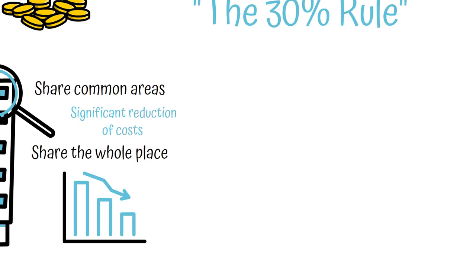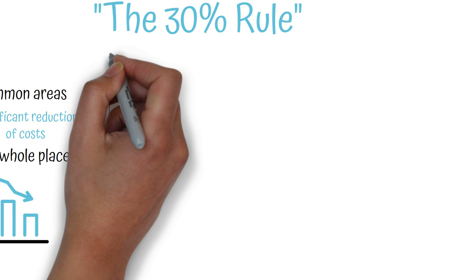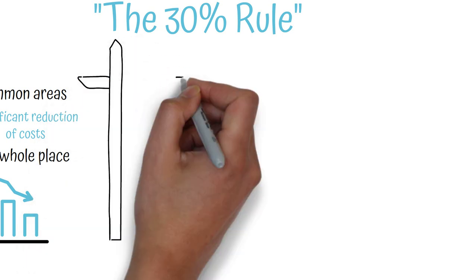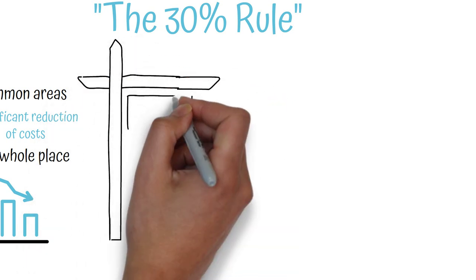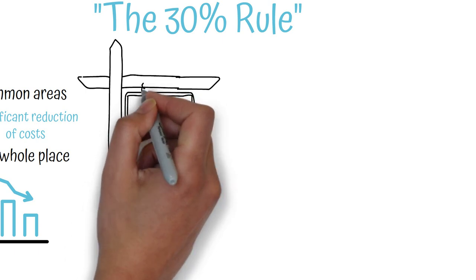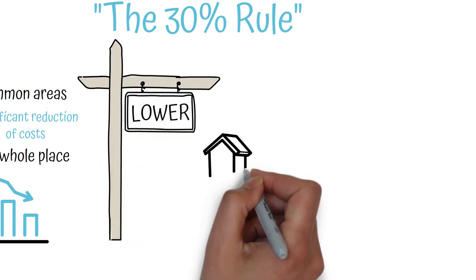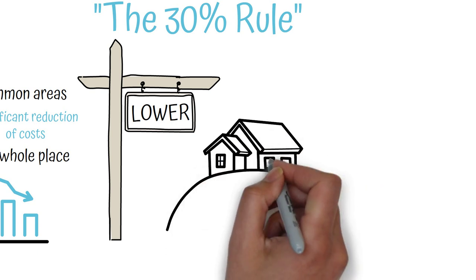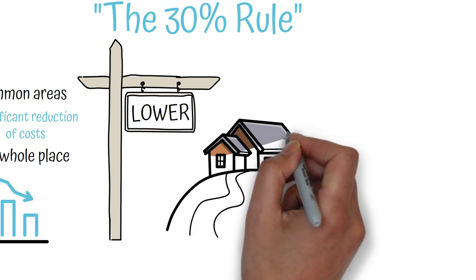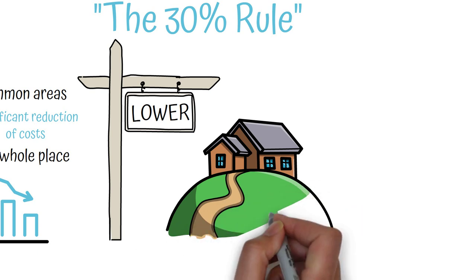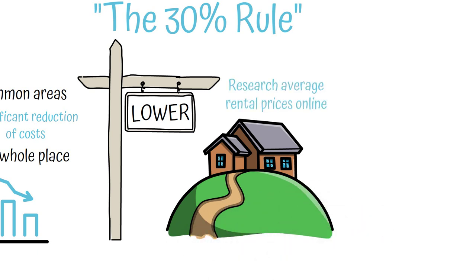Looking for Housing in Areas with Lower Rents. Another way to save on housing costs is to broaden your search to include neighborhoods or areas where rents are generally lower. This can be a good option if you are willing to live further away from the city center or in a less desirable location in exchange for lower rent prices. You can research average rental prices in different areas to find neighborhoods that fit your budget and preferences.